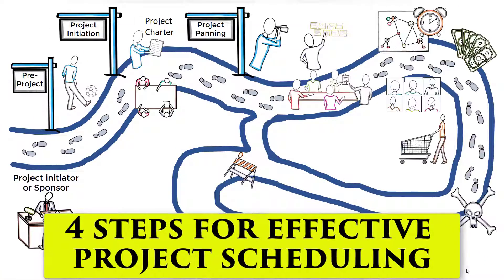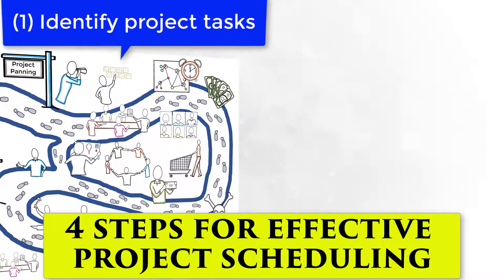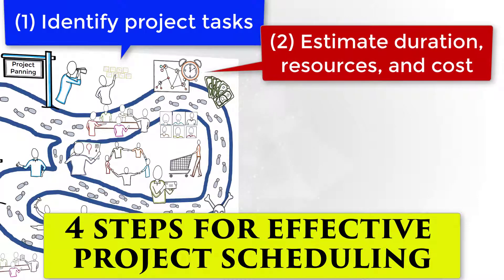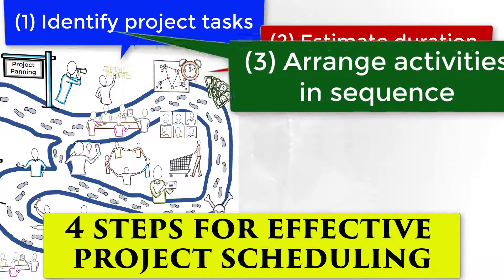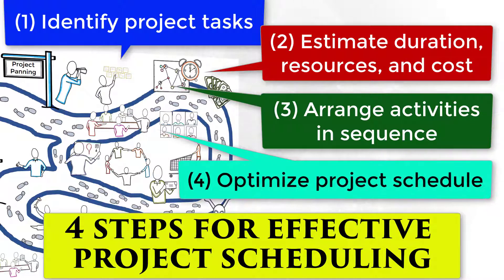In this video, we saw four steps for effective project scheduling: 1. Identify project tasks. 2. Estimate durations, resources and cost. 3. Arrange activities in a sequence. 4. Optimize project schedule. It was just an introduction — my intention was to provide an overview and help you understand the project scheduling activities as they are presented in technical books such as PMBOK.